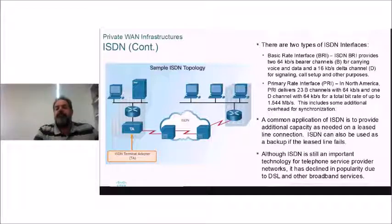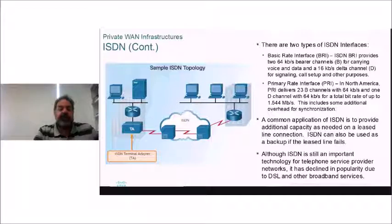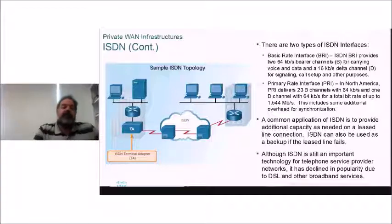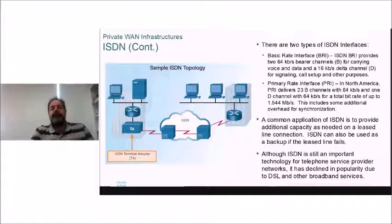BRI had two 64K channels; PRI had either 23 or 30 of those 64K channels. The US T1-based PRI had 23B channels and the E1 version had 30 channels. Both BRI and PRI also have a D-channel (delta channel) for control signals — call setup and the like. It was 16K on BRI and 64K on PRI. A good solution was to have a PRI connection at your main office and BRIs at all branch offices to connect them together.